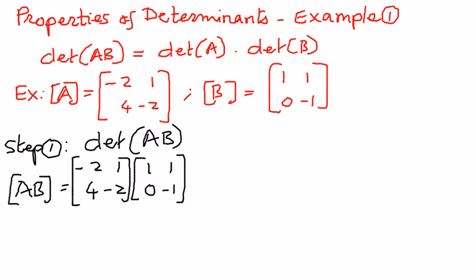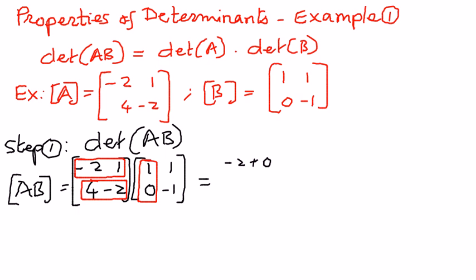When we expand this out, the way we do the multiplication is we take the row of the first matrix and multiply it to the column of the second matrix. We have done matrix multiplications before and will use that technique here. Negative 2 times 1 is negative 2, plus 1 times 0 is 0 — that is the first element. Negative 2 times 1 is negative 2, plus 1 times negative 1 is negative 1 — that is the second element.